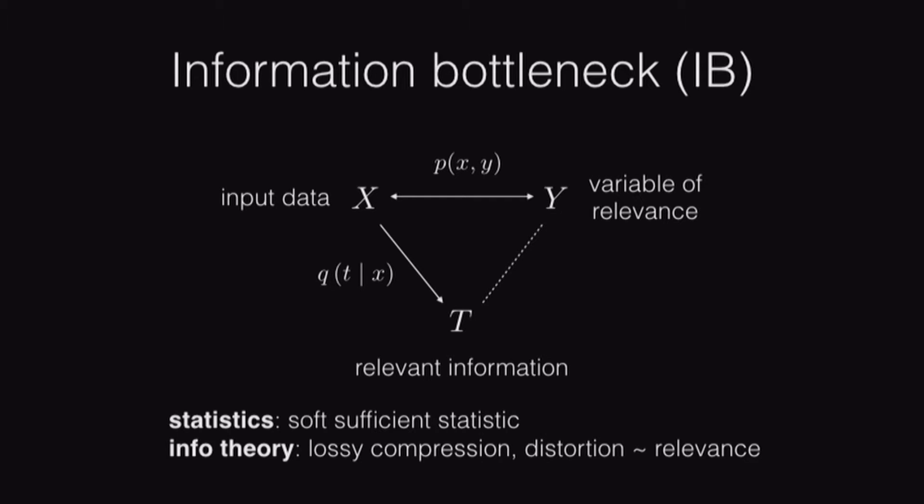From an information theory point of view, you can think about this as a lossy compression problem, where we want to compress X into T in a way that selectively maintains information about Y. Our distortion measure is like some measure of relevance of the information about Y.